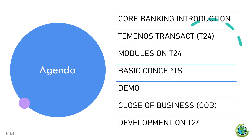Then we will demonstrate some functions on the T24 system. We'll showcase some practical functions within T24 — from account creation to transaction processing, we'll demonstrate how T24 works. The next topic is close of business, or COB. COB is a critical daily process in banking. We'll discuss what it entails, how it impacts account balances, and its significance for accurate financial reporting.